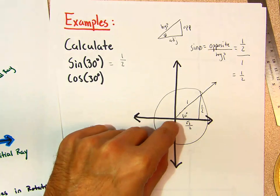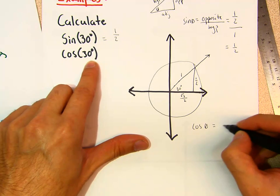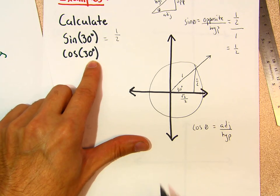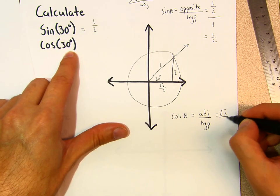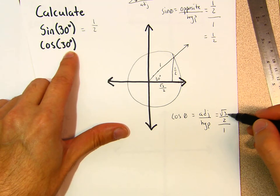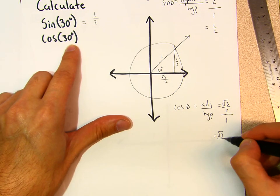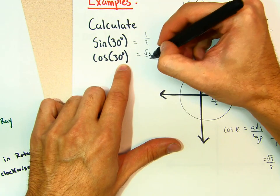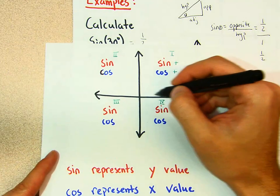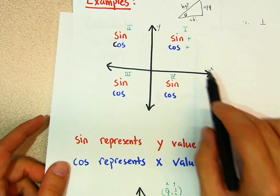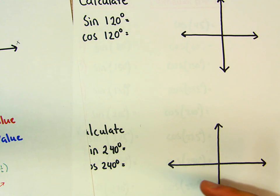Sine of 30° = opposite/hypotenuse = (1/2)/1 = 1/2. For cosine of 30°, cosine equals adjacent over hypotenuse. The adjacent is √3/2 and the hypotenuse is 1, so cosine of 30° = (√3/2)/1 = √3/2. In Quadrant 1, both x-values and y-values are positive, so cosine and sine are both positive — our answers remain positive.